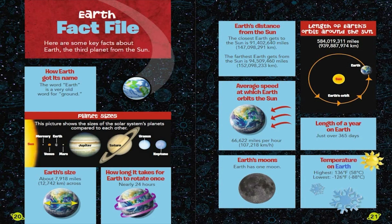Temperature on Earth. Highest: 136 degrees Fahrenheit, 58 degrees Celsius. Lowest: Negative 126 degrees Fahrenheit, negative 88 degrees Celsius.